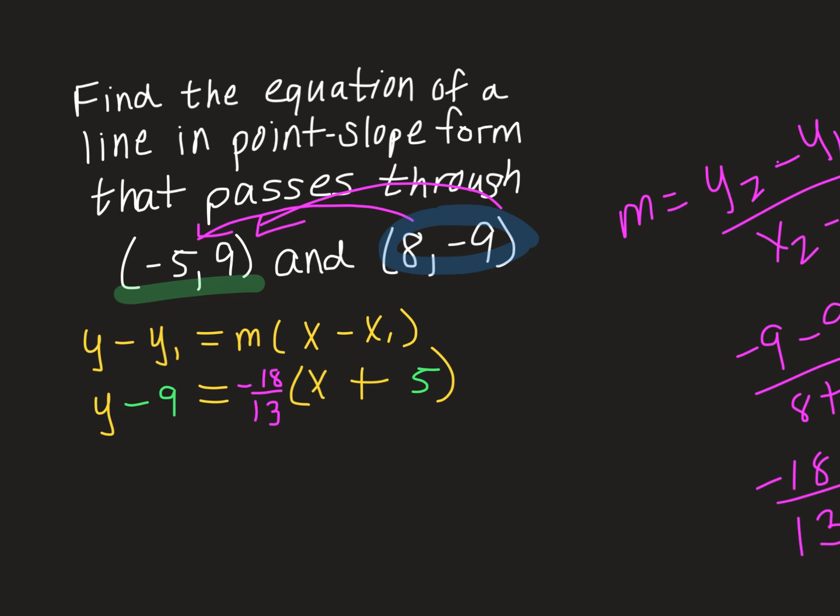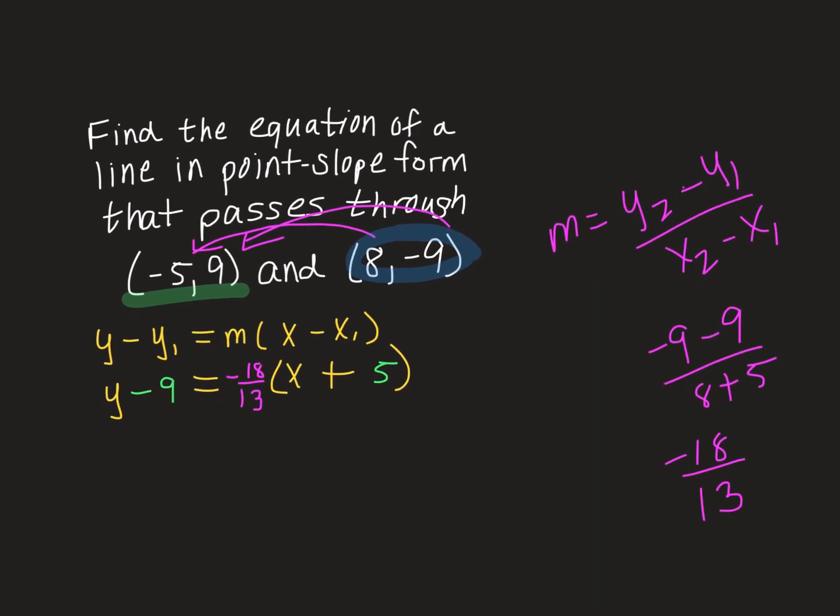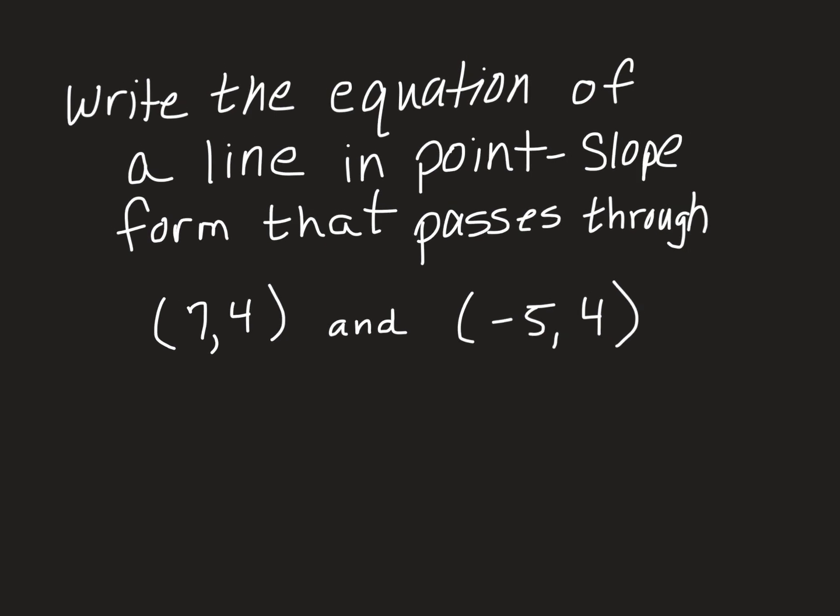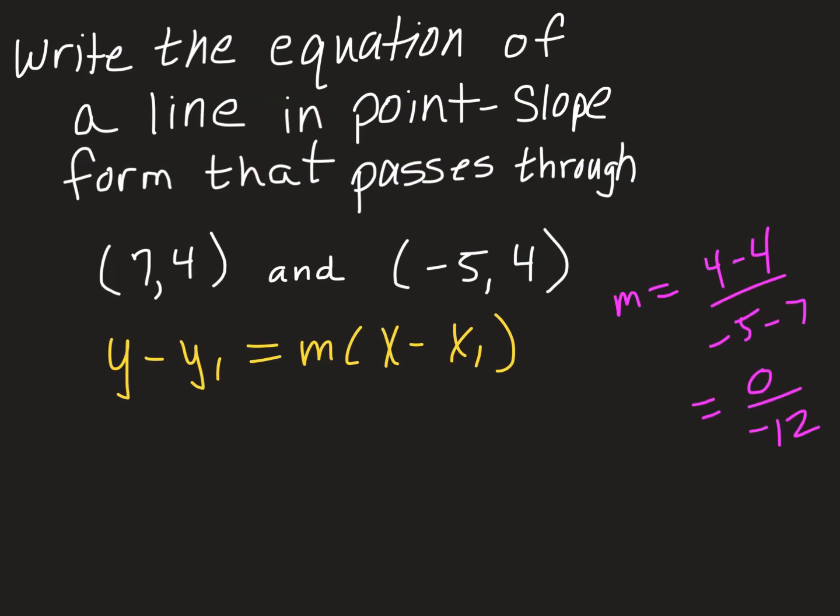Now there are a couple of special circumstances that I want to show you before we end this video. And this is an example of one of them. So I'm going to go ahead and do the quick work here. And just kind of do that slope for you real quickly. So when I did that slope formula, this time you'll notice that my slope is 0 over negative 12. So I'm going to put in that 0 for the slope. And I'm just going to be consistent and stick to what I've been doing and use the first coordinate for my y one and my x one.